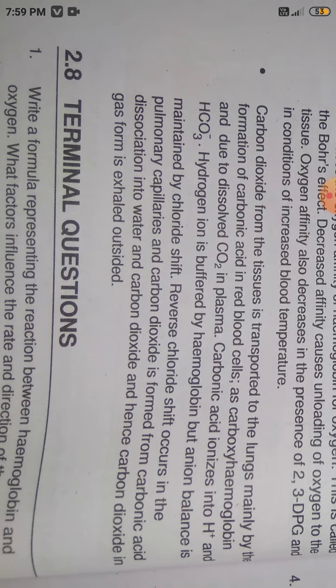The last summary point is that carbon dioxide from the tissue is transferred to the lungs mainly by three mechanisms: the formation of carbonic acid in the red blood cell, as carboxyhemoglobin, and as dissolved CO2 in the plasma.